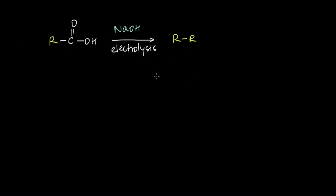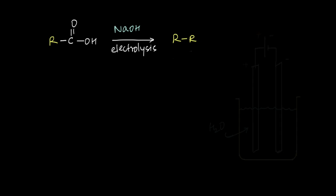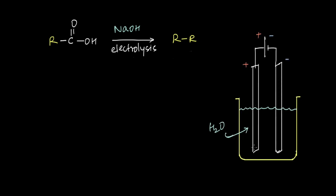We take some water and dip in metal rods, because metals can conduct electricity. We call these metal rods our electrodes. These electrodes are connected to a battery — one to the positive terminal and one to the negative terminal. Because the positive terminal is electron-deficient, it pulls electrons from its metal rod, while the negative terminal has excess electrons and pushes them into its metal rod.